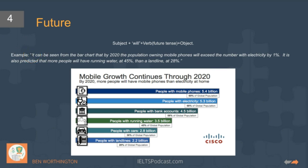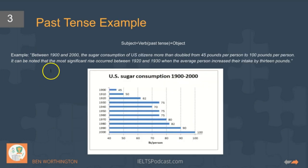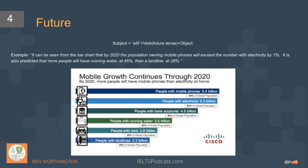Hopefully you'll have spotted that there's this construction — the passive: 'It can be seen,' and also 'It can be noted.' The reason we're using this is because we're going to use a wide range of grammatical structures, and this one is very useful for your Academic Task 1.